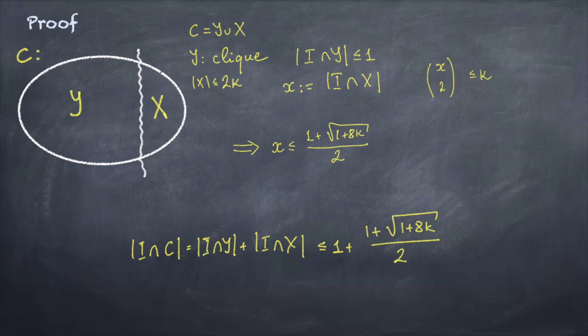And also for the enumeration part, as the complement of the graph formed by set X is √k-degenerate, we also can by known results enumerate all cliques there in time 2^(√k).